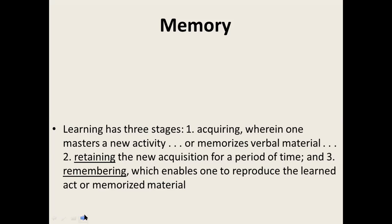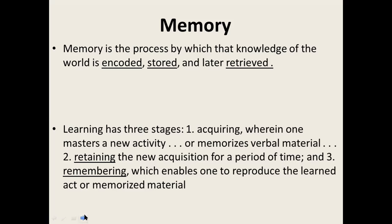What exactly is memory? It is a part and parcel of the learning process because learning actually occurs in three stages. The first stage is acquiring, the second stage is retaining, and the third stage is remembering. Whenever you are learning something, these are the three stages through which the neural mechanism acquires knowledge. Whatever you have retained will be recalled at a later stage. Memory is the process by which knowledge of the world is encoded, stored, and later retrieved.